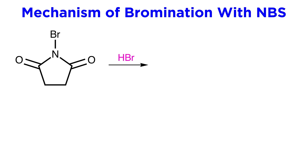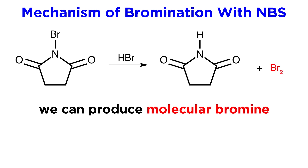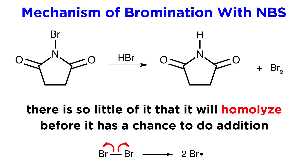The mechanism works as follows. In the presence of hydrobromic acid catalyst, small amounts of molecular bromine will be produced. This will be in small enough amounts that there is enough time for bromine to undergo homolysis before having a chance to interact with a pi bond, so there will be bromine radicals in solution.